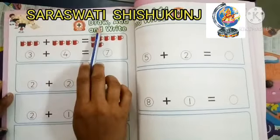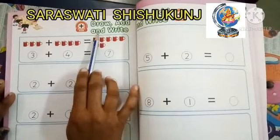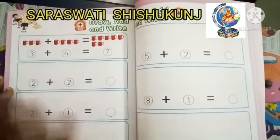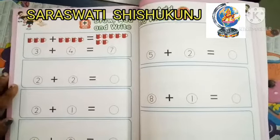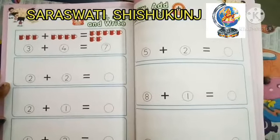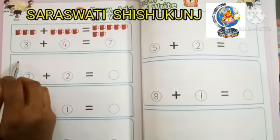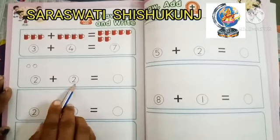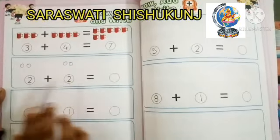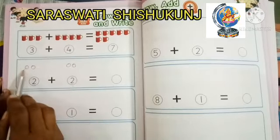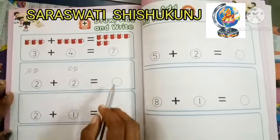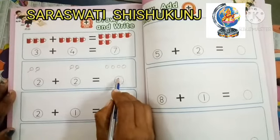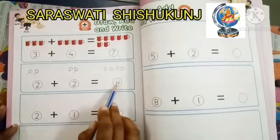Let's do the next exercise here. We have to draw and add and write it. This is number two. Students, you can draw anything like shapes, fruits, vegetables, a standing line, a slipping line, a circle, etc. We will draw circles here. Number two, so we draw one and two circles. Then here also number two, so again one and two. Now let's recount both sides — how many circles? One, two, three and four. So there are four. Two plus two is equal to four.